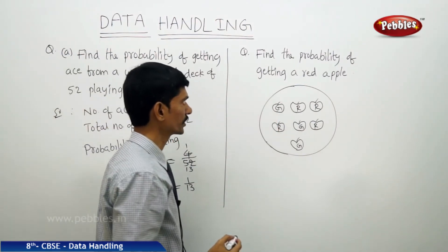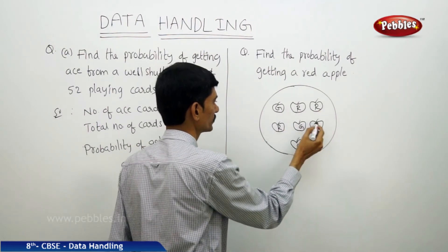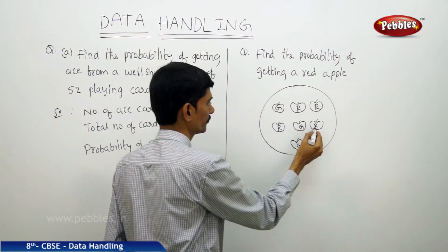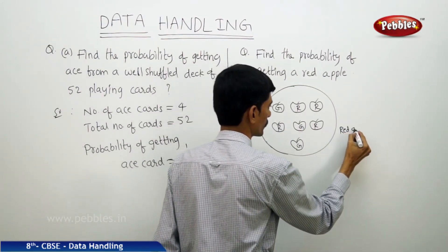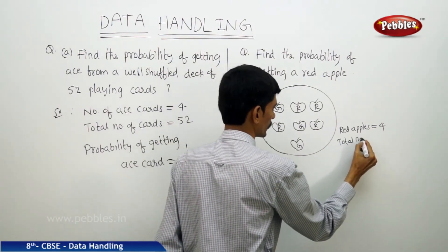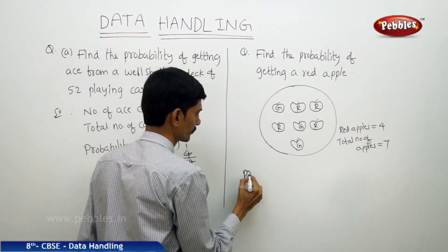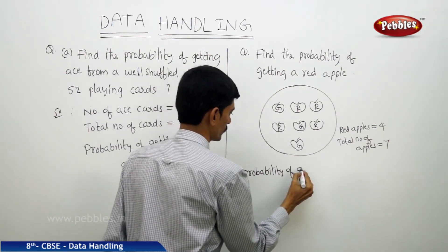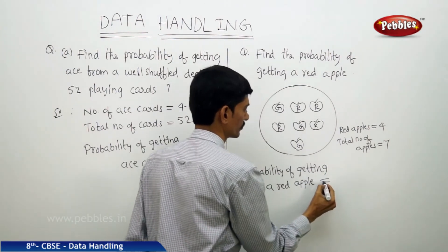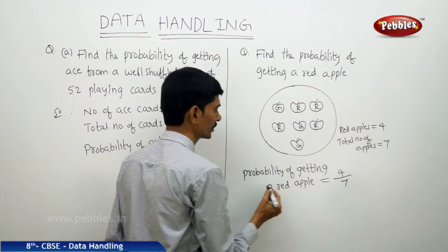Next question: find the probability of getting a red apple. In the given circle, there are 7 apples totally. Out of 7 apples, there are 4 red apples. The total number of apples is 7. So the probability of getting a red apple is 4 by 7.